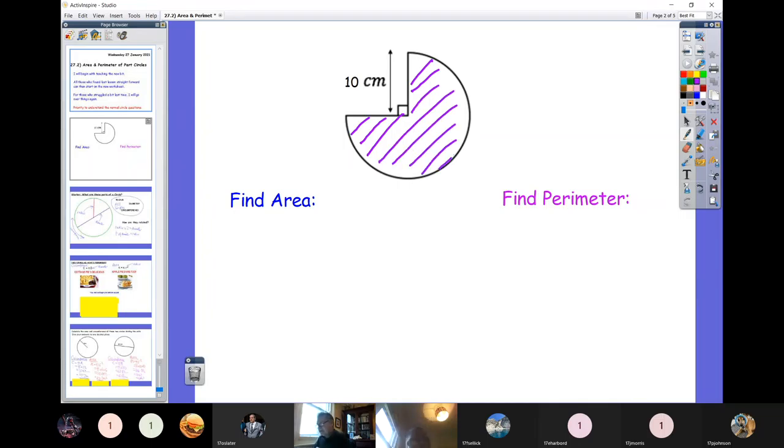Your starting point is what are my two formulae for working out circles. If I want to work out the circumference, it's pi times diameter. And if I want to work out area, it's pi r squared. The way I've suggested you learn that is cottage pies delicious, apple pies are too.